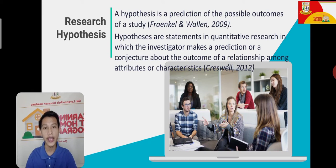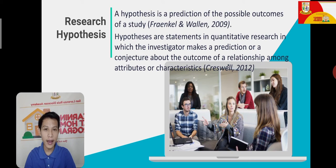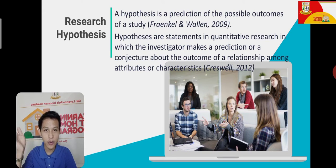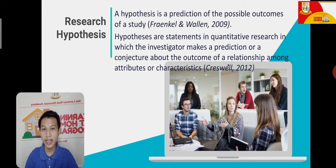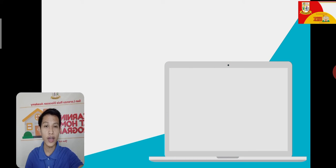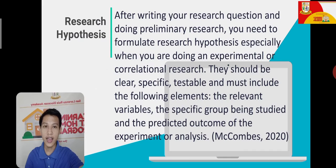Research hypotheses is like an educated guess. When we are doing a scientific investigation, we need to have hypotheses — a prediction of what will happen in your research and what will be the effect of the variables on each other. We have to think in advance what will happen in our research and what will be the result. In the final part of our research, we can say whether we achieved or the hypothesis about our research was correct.